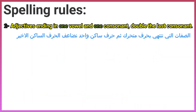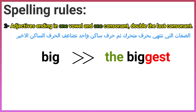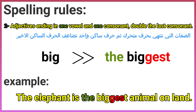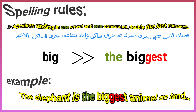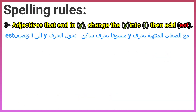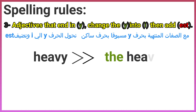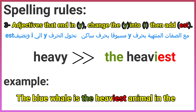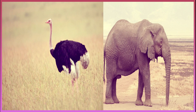Rule 2 — adjectives ending in one vowel and one consonant double the last consonant. For example: big → the biggest. The elephant is the biggest animal on land. Rule 3 — adjectives ending in 'y' change the 'y' to 'i' and add 'est'. For example: heavy → the heaviest. The blue whale is the heaviest animal in the sea.